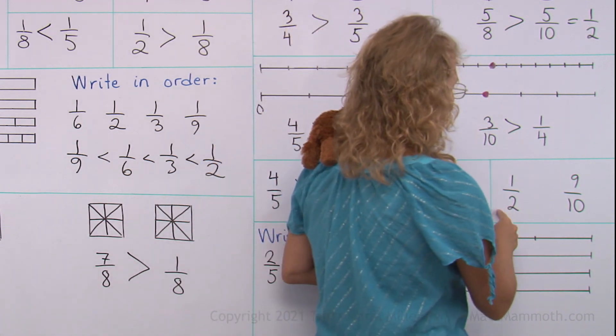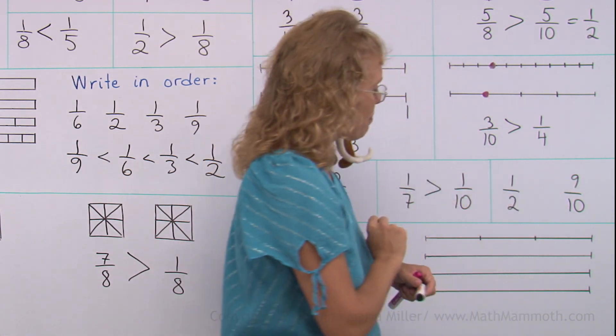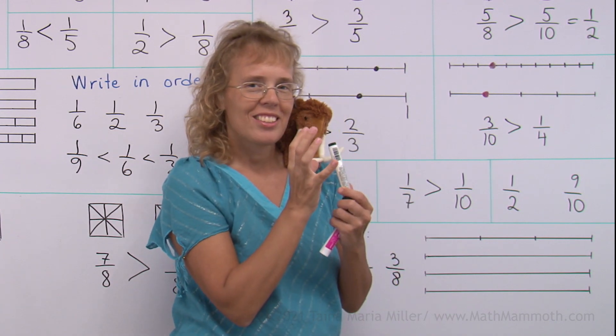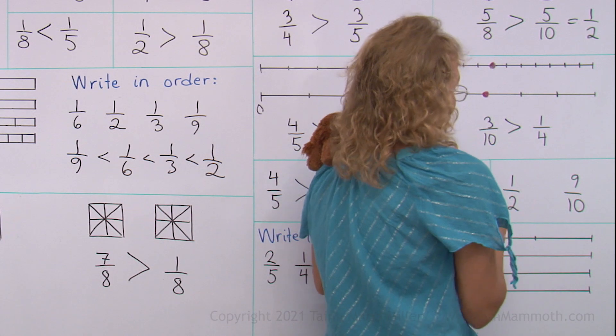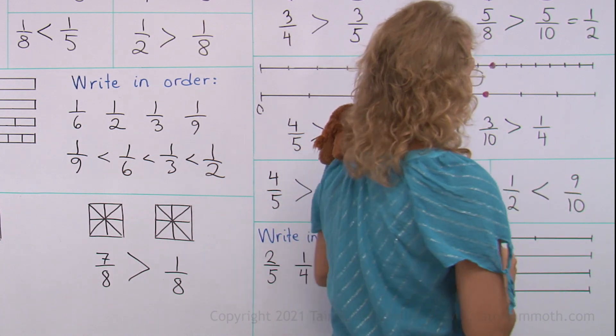Then, one-half and nine-tenths. Imagine nine-tenths. Isn't that almost the whole thing? Whereas one-half is just one-half. So, that's how it goes.